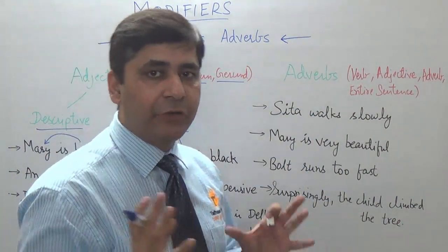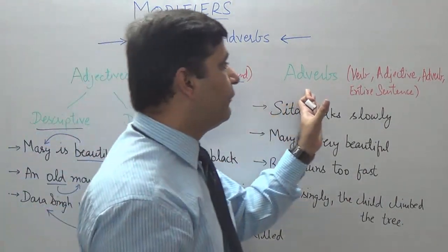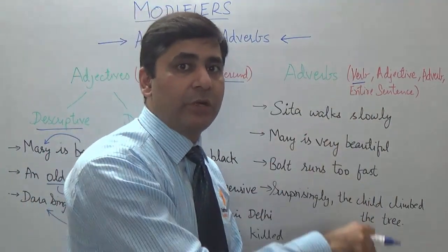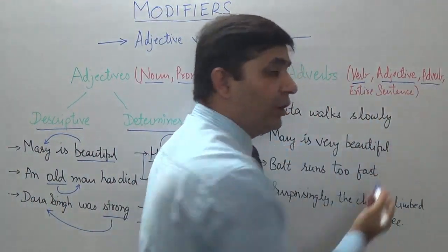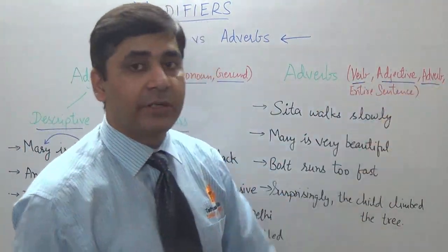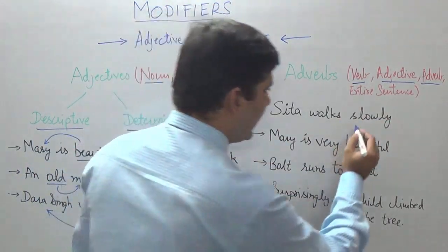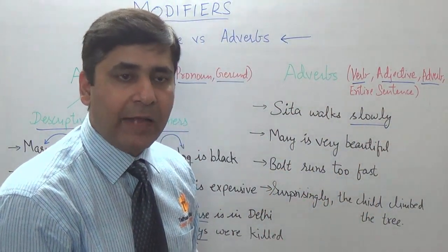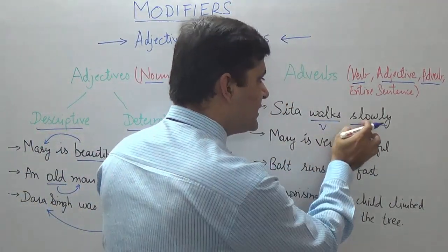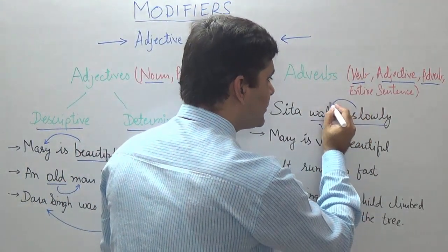On the other hand we have adverbs. Adjectives modify nouns or pronouns; similarly adverbs are also modifiers, but they give additional information about a verb, an adjective, another adverb, or the entire sentence. For example, 'Sita walks slowly.' Slowly is talking about 'walks,' which is a verb. Since this word gives additional information about a verb, it becomes an adverb — it modifies the verb.